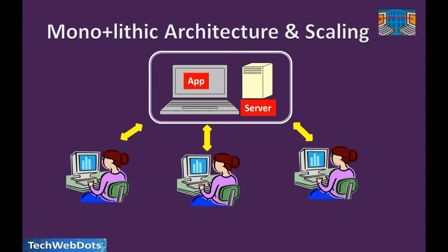Consider an e-commerce website: during a sale, there's lots of traffic. Sometimes that traffic is manageable, sometimes it's not. If you want to scale, you have to scale the whole application — but maybe only the billing area or product service is getting heavy traffic. Ideally, if the new product launch service were a separate application, you could scale only that area, which would be really beneficial.